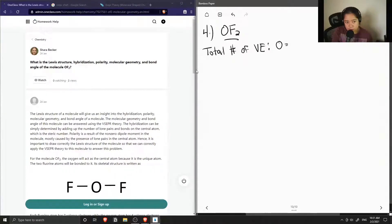Oxygen has six valence electrons and fluorine has seven. Since we have two fluorine atoms, we multiply this by two to get a final answer of 20 valence electrons.